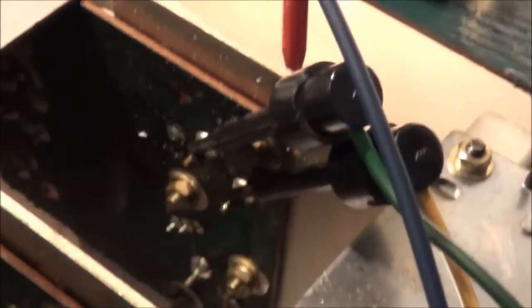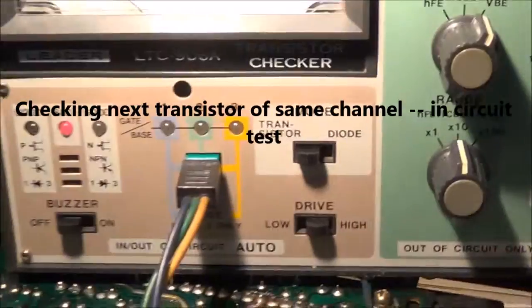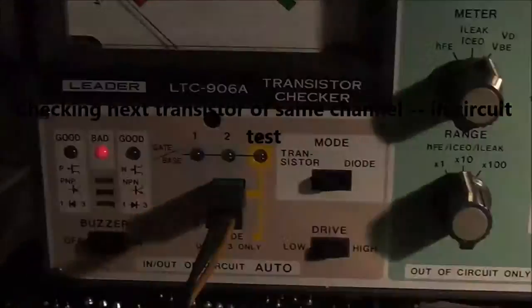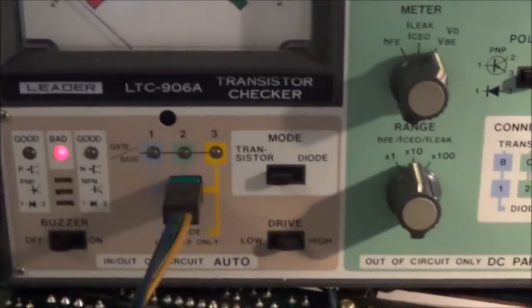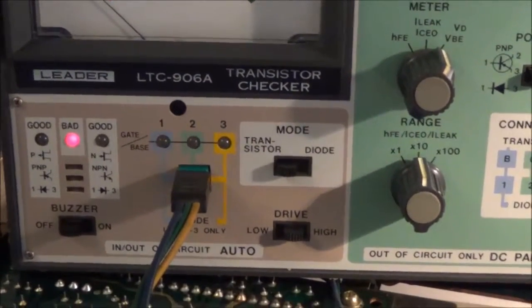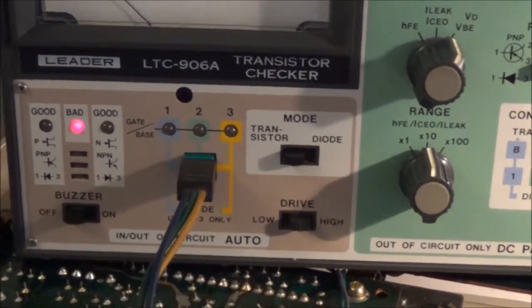You can see how I got the leads here hooked up. Now I'm just checking the next transistor, and according to my transistor tester it shows this as being bad. So I'm going to have to take this out and basically unsolder it. It's bolted in, so I'll unbolt it and then check it again.